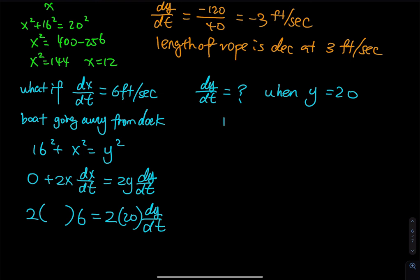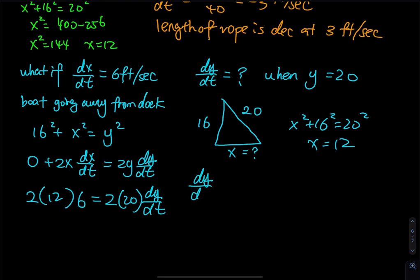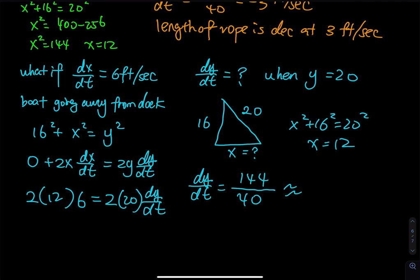Solving for dy/dt: dy/dt equals 2 times 6 times 12 divided by 2 times 20, which equals 144 divided by 40, which is approximately 3.6 feet per second.